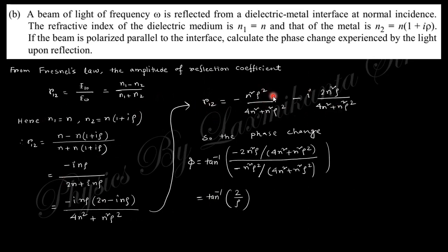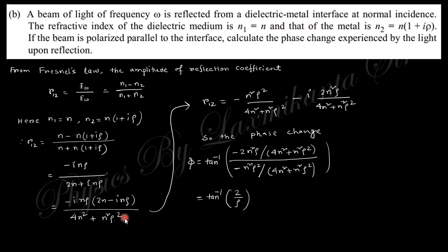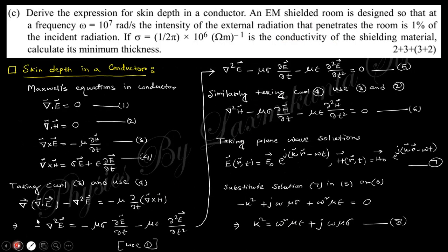Separating the real and imaginary parts of the reflection coefficient, the phase change is the argument of the complex number, that is tan⁻¹(imaginary part / real part). Dividing gives tan⁻¹(2n/ρ) as the phase change. This is the phase angle upon reflection from the dielectric-metal interface.